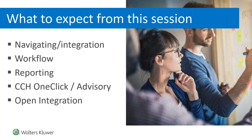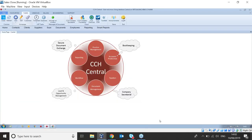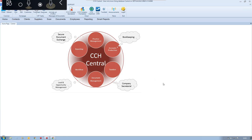The first thing we're going to go through is navigating through Central. Hopefully you can all see my screen. I've got a nice big red wheel in the middle of my screen detailing six red circles, which indicate modules in the CCH system — such as practice management, accounts production, taxation, document management, workflow, and reporting. The CCH Central system can be looked at modularly, but it works best the more modules you have because they all integrate together.